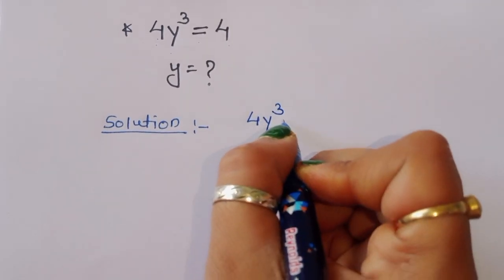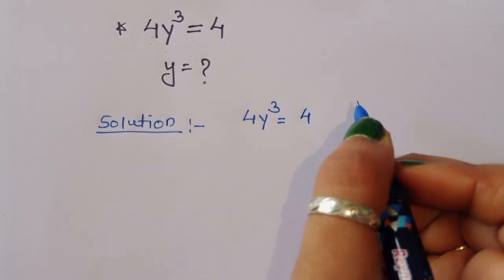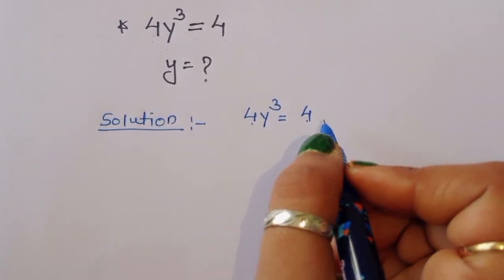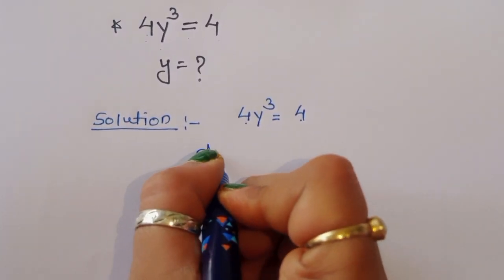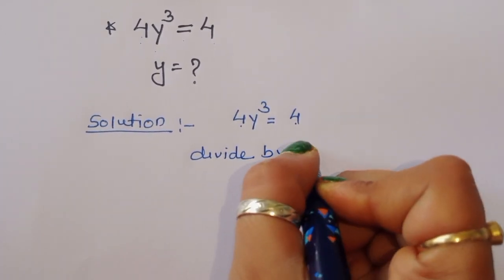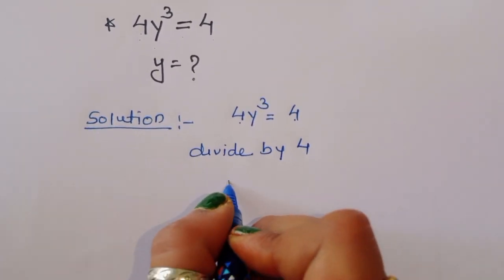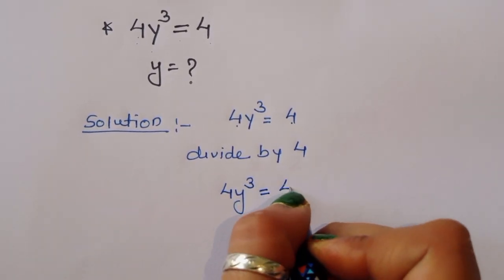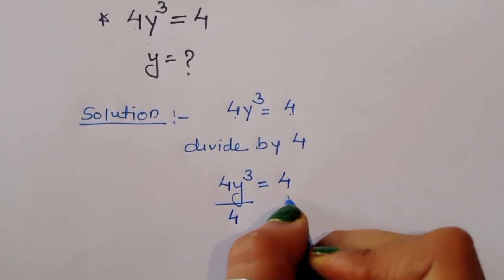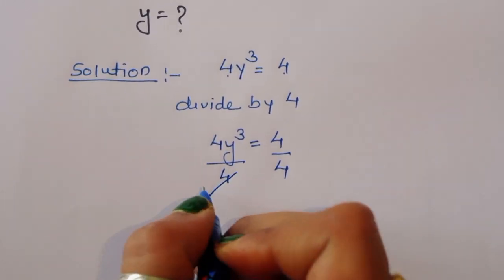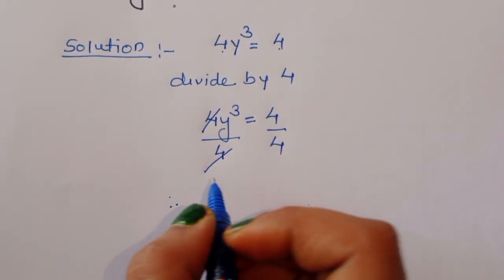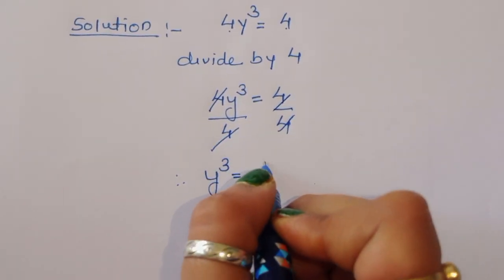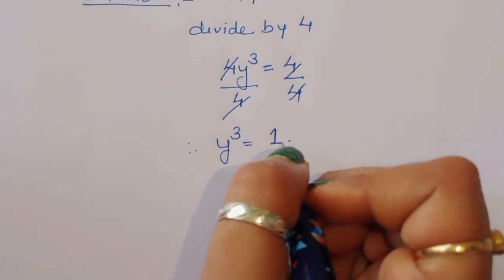We have 4y³ = 4. We have 4 here and 4 here, so we can divide both sides by 4. Dividing both sides by 4, the 4s cancel, and therefore y³ = 1.